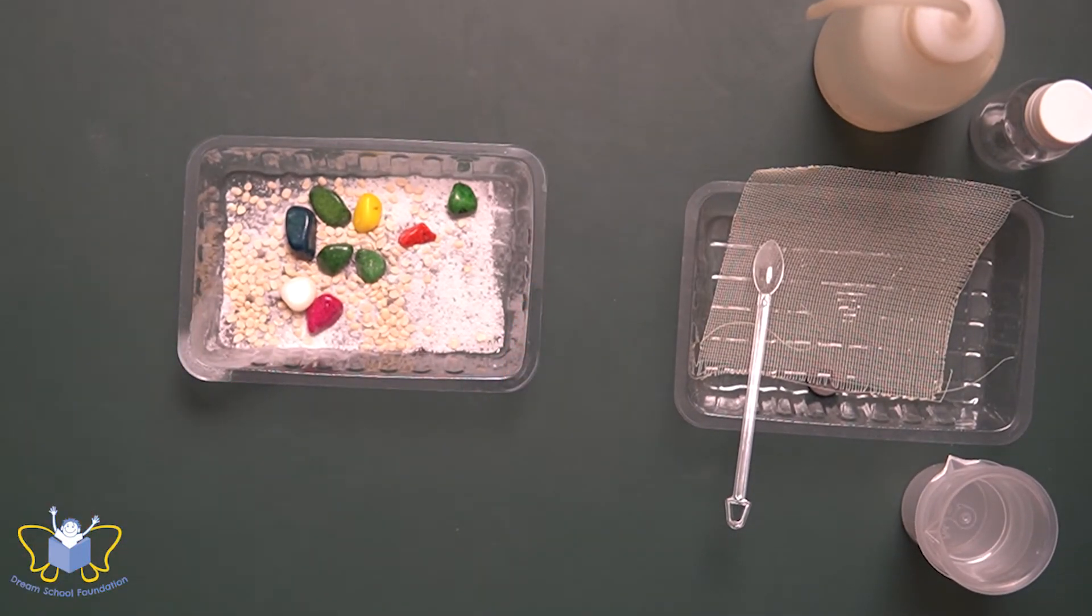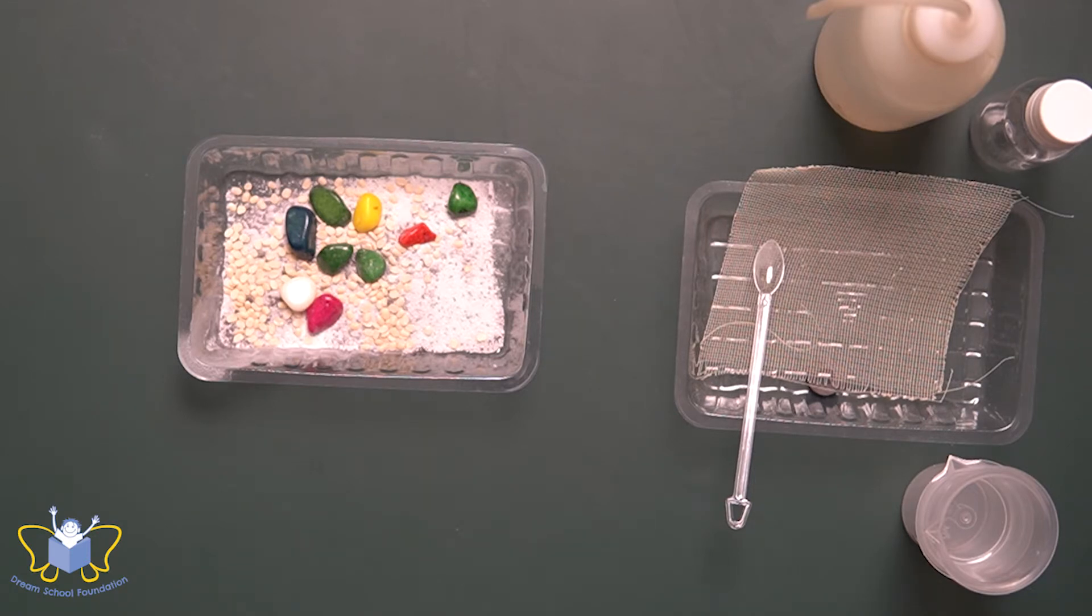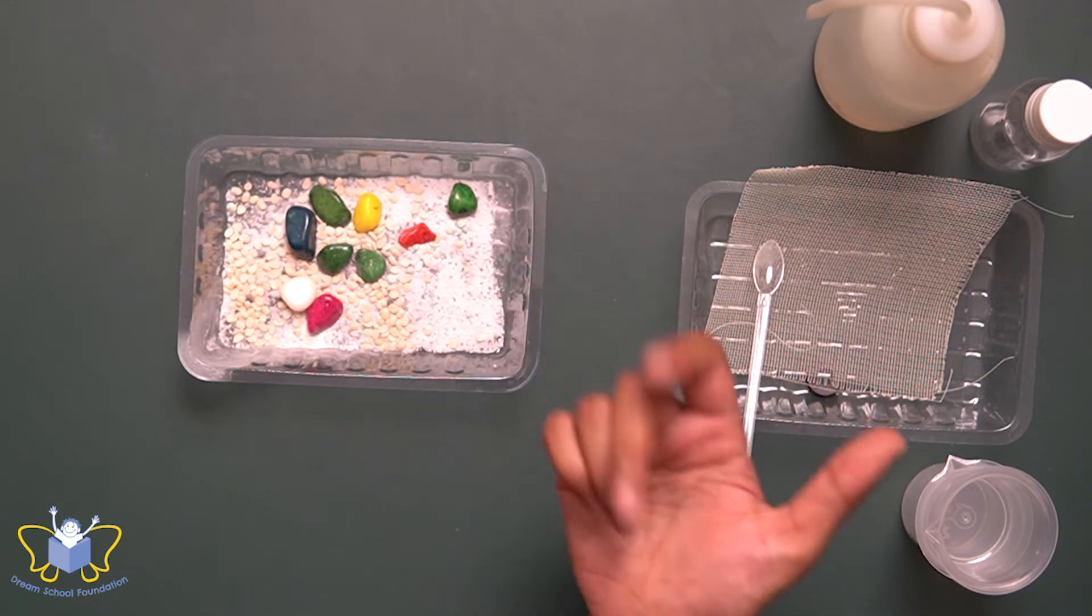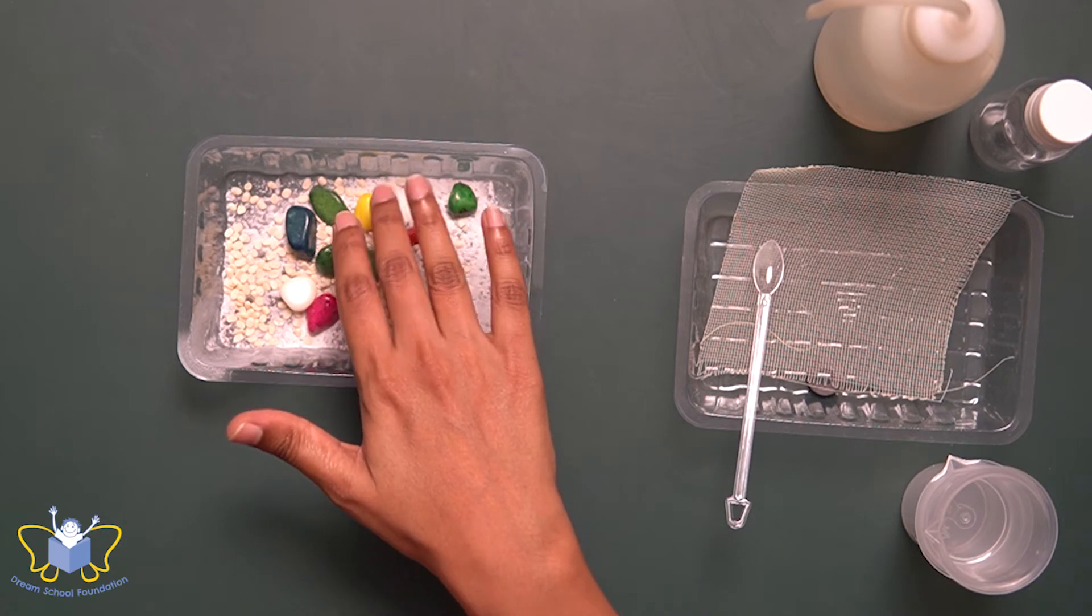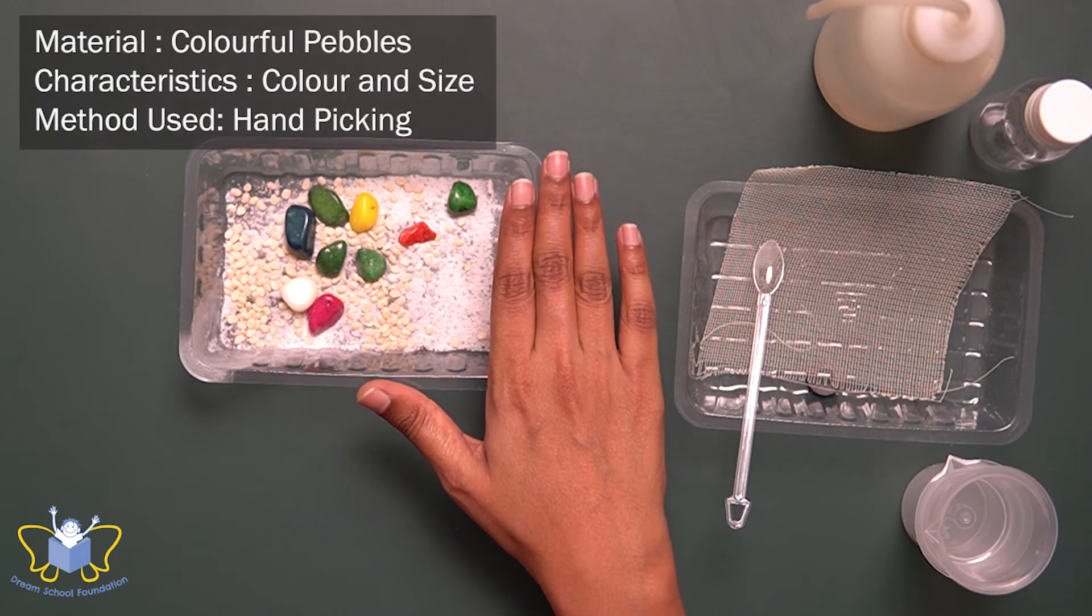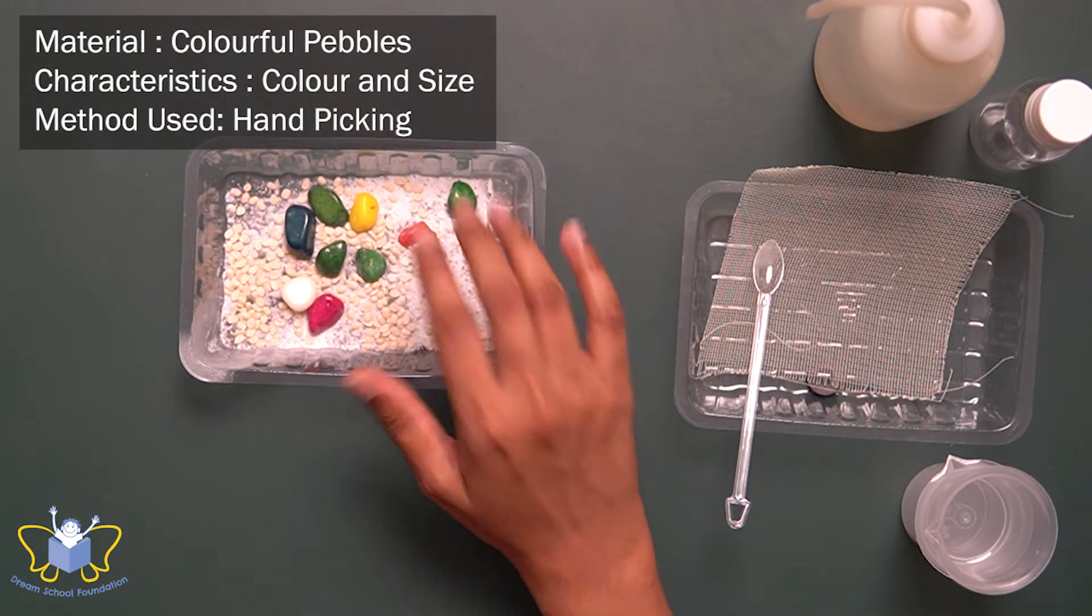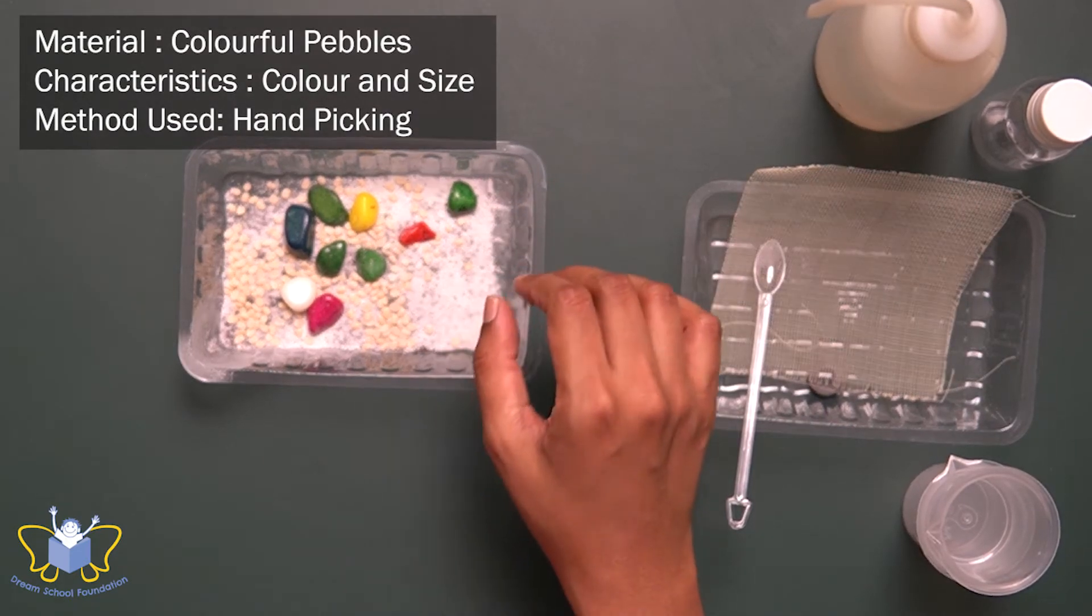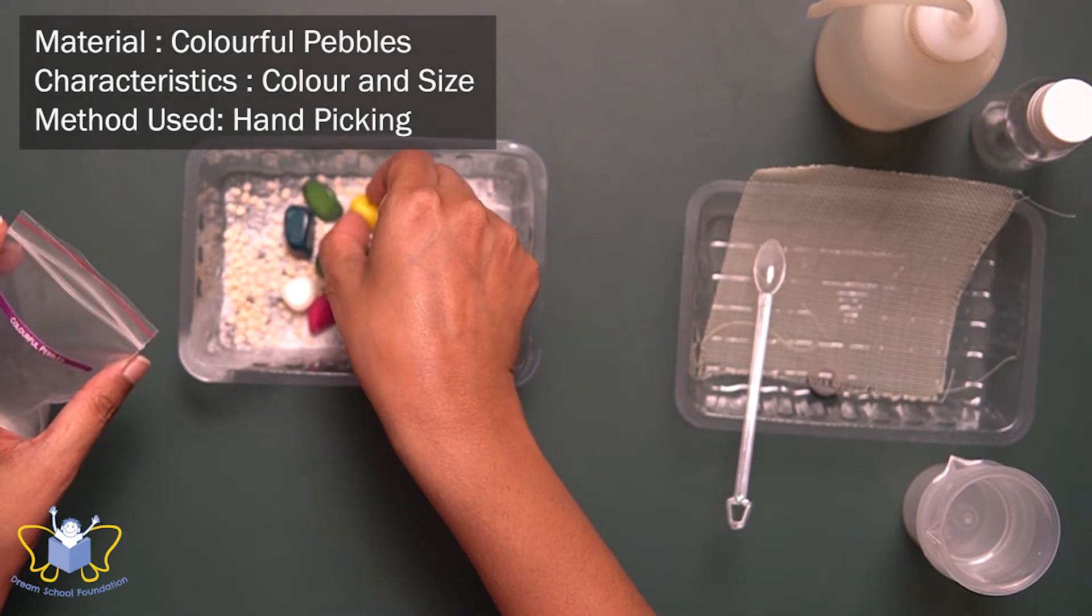Now that we have formed the mixture, the question is, which one do we separate first? And what is the characteristic that we are going to make use of to separate these components from one another? So what is the first thing that will strike when you look at this mixture? The color, right? And also look at the size of these pebbles. They are way bigger than all the other materials. So the first thing that I'm going to separate are these colorful pebbles.